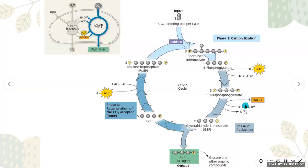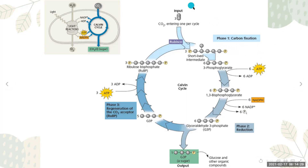The Calvin cycle actually has three phases. Phase 1 is carbon fixation. Phase 2 is reduction. And phase 3 is regeneration. In carbon fixation, CO2 enters the plant through the stomata and undergoes the Calvin cycle. The first thing that happens is that CO2 is fused with a molecule called RuBP, or ribulose bisphosphate. This reaction is catalyzed by an enzyme called RuBisCO, or ribulose bisphosphate carboxylase oxygenase.